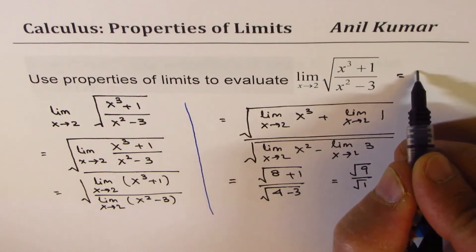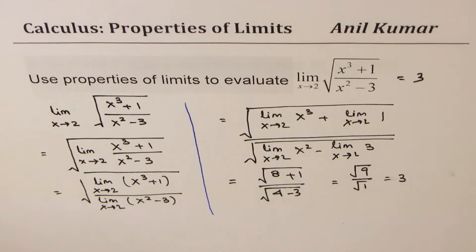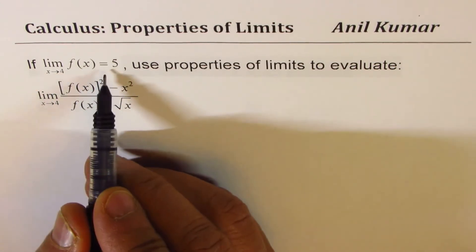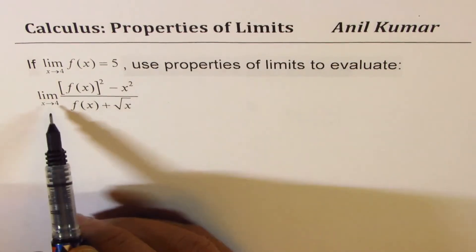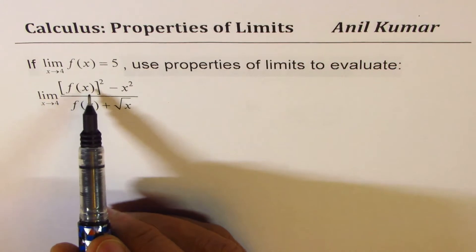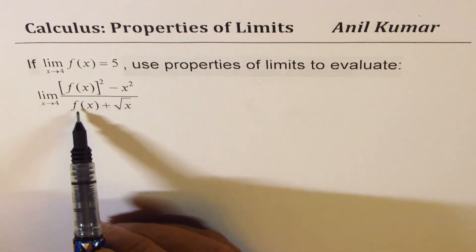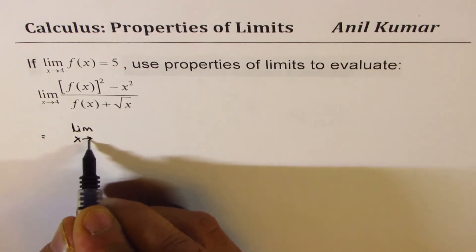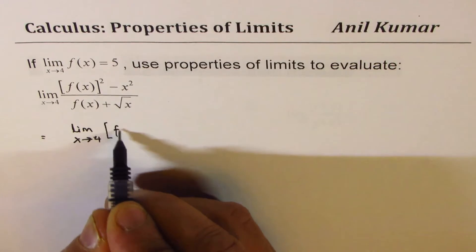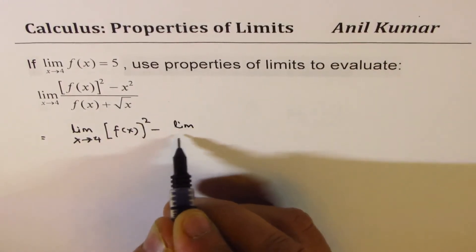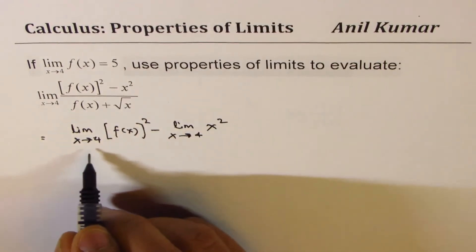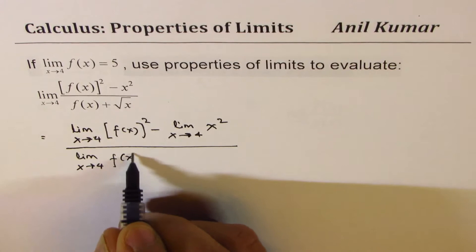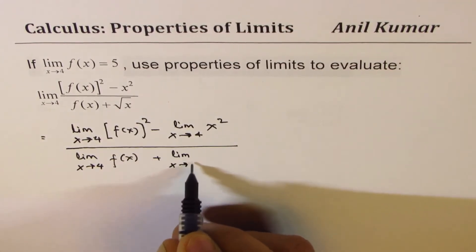Now let's take up the next example: if the limit of f(x) as x approaches 4 equals 5, use properties of limits to evaluate the limit as x approaches 4 for f(x) squared minus x squared, divided by f(x) plus the square root of x. Using properties, we write this as the limit of f(x) squared minus the limit of x squared, over the limit of f(x) plus the limit of the square root of x.